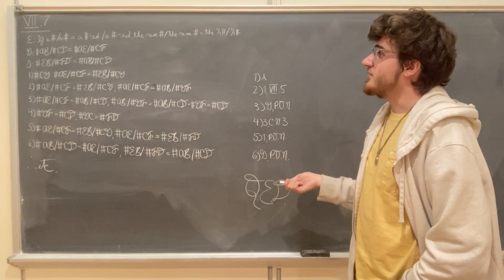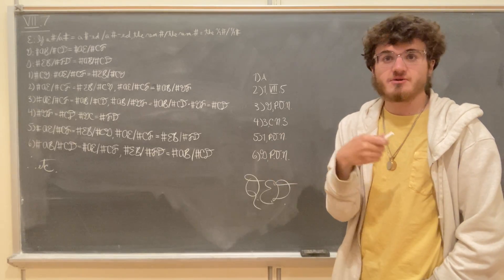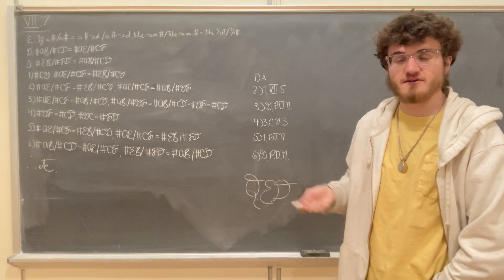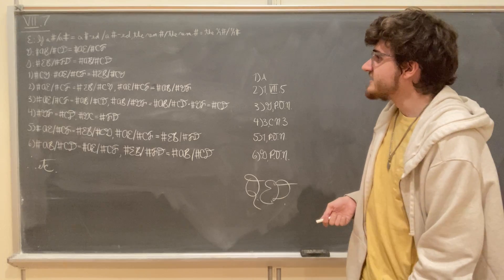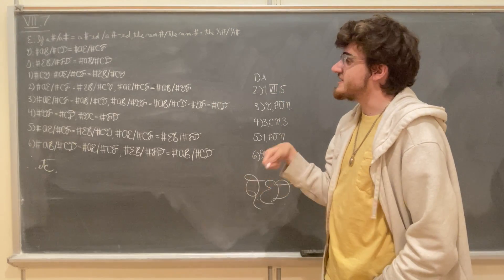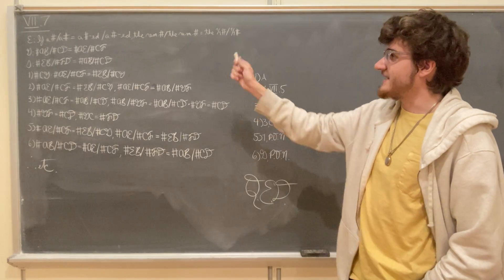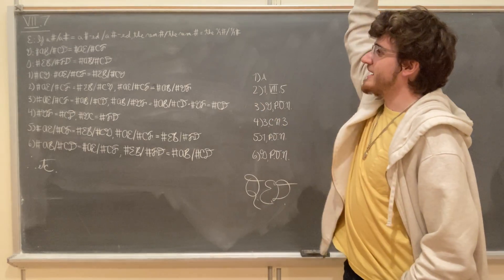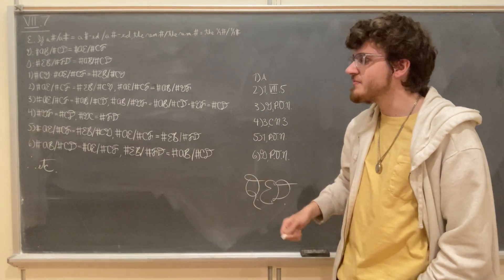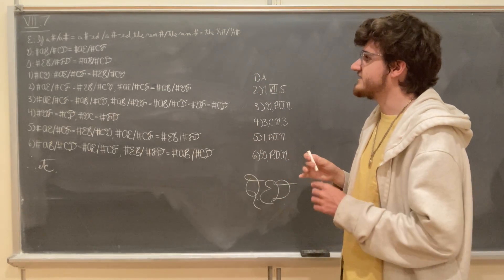And what we're going to prove is that the remaining number is the same part of the remaining number that the whole is of the whole. So we're going to prove that the number EB, which remains from AB minus AE, is the same part of the remaining number FD, which is CD minus CF, that the whole AB is of the whole CD.